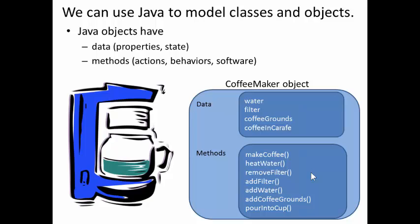As an example, let's take a coffee maker object. The coffee maker object has data. It has water, a certain amount of water perhaps. It has a filter, either present or absent. There may be coffee grounds, present or absent in the filter. There may be coffee in the carafe.